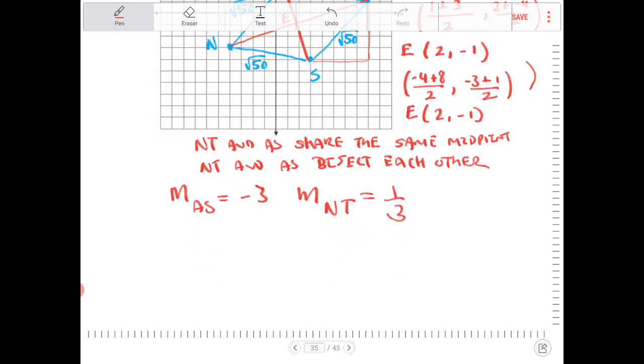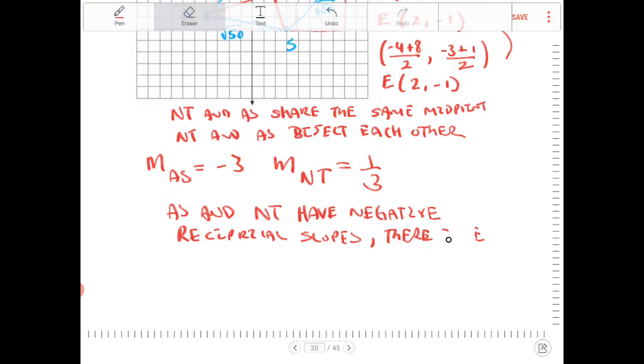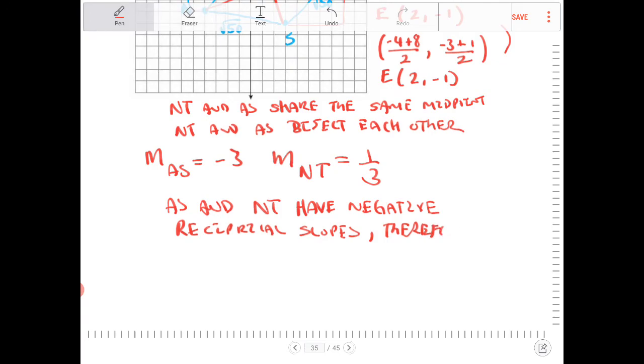So, because of this, A-S and N-T have negative reciprocal slopes. Therefore, A-S is perpendicular to N-T.